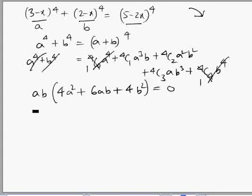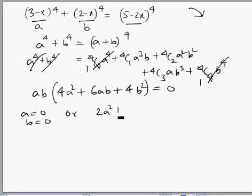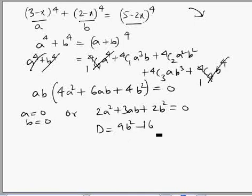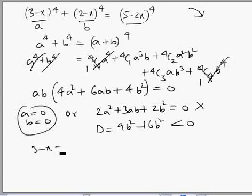After factoring, the leftover is: ab·(4a² + 6ab + 4b²) = 0. So either a = 0, or b = 0, or we divide out 2 to get 2a² + 3ab + 2b² = 0. Treating this as a quadratic in 'a', we check the discriminant: 9b² - 16b² is less than 0, so we cannot get any real roots from this factor. But a = 0 means 3 - x = 0, which gives x = 3.